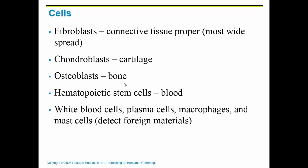Fibroblasts are going to be the most widespread — all of the proper connective tissues are going to have lots of fibroblasts, and we will be identifying these underneath the microscope. Chondroblasts become cartilage cells, osteoblasts become bone cells, and hematopoietic stem cells will become your blood cells. We also have white blood cells, plasma cells, macrophages, and mast cells. Macrophages phagocytize bad stuff, and mast cells detect foreign materials to get an immune response going for the body.